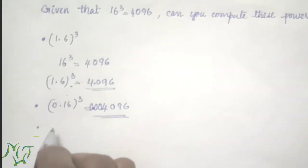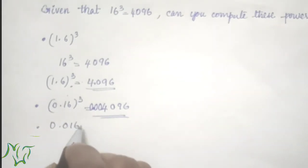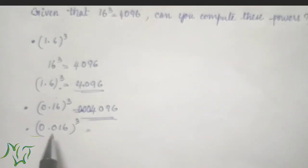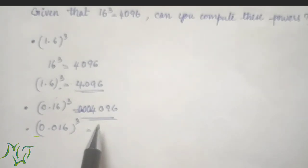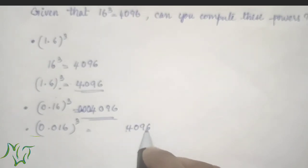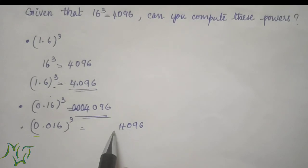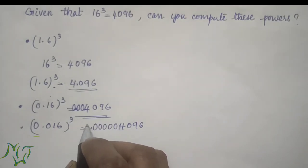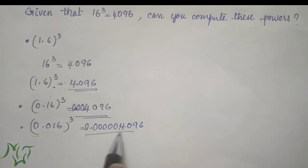Next, 0.016 whole cube. Again, 16 cube is given. Here we have 3 decimal places and the power is 3, so 3 times 3 equals 9 — there must be 9 decimal places in the answer. 16 cube is 4096, which has 4 digits, so we need 5 more zeros: one, two, three, four, five. Then put the point and add a leading zero. The final answer is 0.000004096.